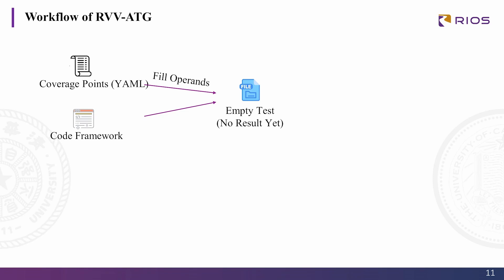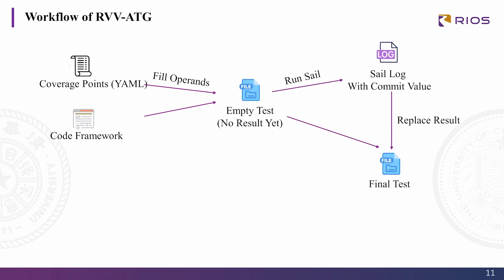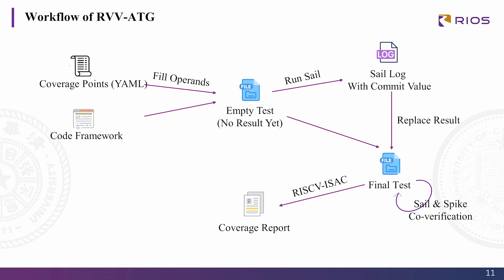Here is the workflow of the automatic test generator. Given a coverage points YAML file as input, we first put operands into an empty test file — it has no results yet. Then we run this empty test using SAIL. We extract the results of those tests and fill them into the empty test file. Finally, we get the final test, and then generate a coverage report for it.